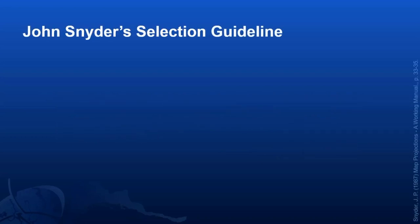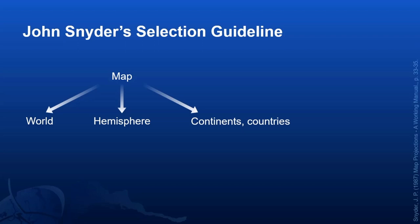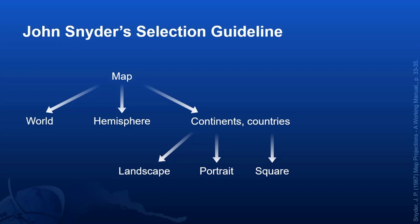There have been several guidelines on how to choose a good map projection over the years. One of the easiest to work with was done by John Snyder, who worked at the USGS in the 1980s and 90s. First, you consider your area of interest: the world, a hemisphere, or continents and countries. For smaller areas, you then look at the general extent of the data — does it fit more east-west in a landscape form, more north-south like a portrait, equally in all directions like a square or circle, or does it extend off at an oblique angle?